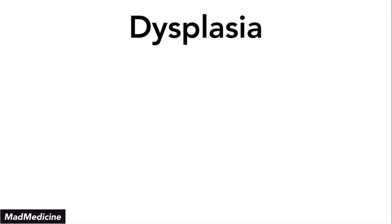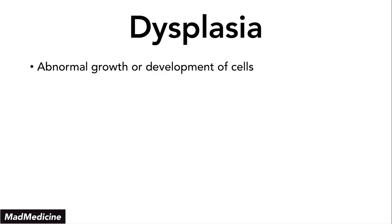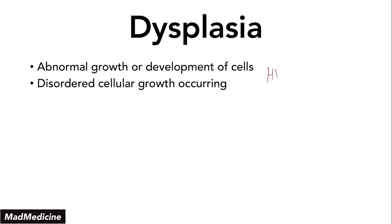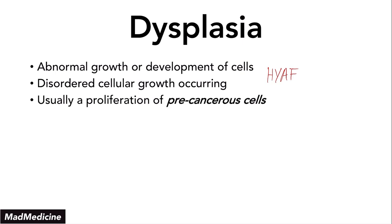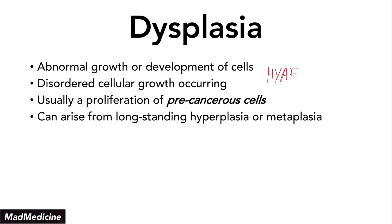What is dysplasia? Dysplasia is abnormal growth or development of cells, and it occurs because of disordered cellular growth. If you are asked what really is dysplasia, you need to remember that it is disordered, abnormal growth of developing cells. Usually, this is a precancerous lesion, and the proliferation can progress onto cancer. It usually arises from long-standing hyperplasia or metaplasia.